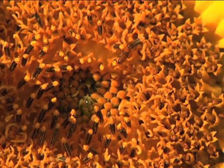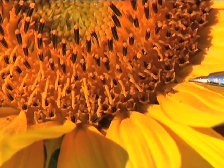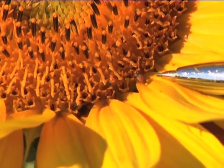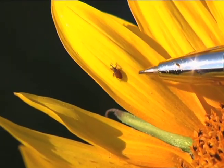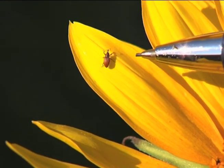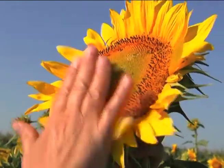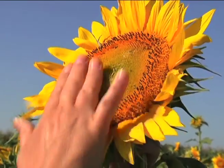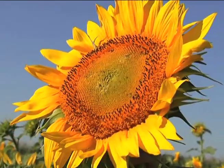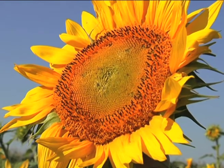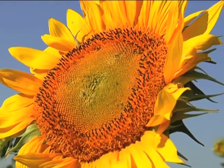You can see there's one right there on the face of the head. It takes a couple of minutes for the weevils to move up — there's another one that's moved out. Then use the table to estimate the total number of weevils per plant. You can also rub the face of the sunflower head if you don't have any DEET or mosquito repellent, and this will cause the weevils to move up from their hiding spots.